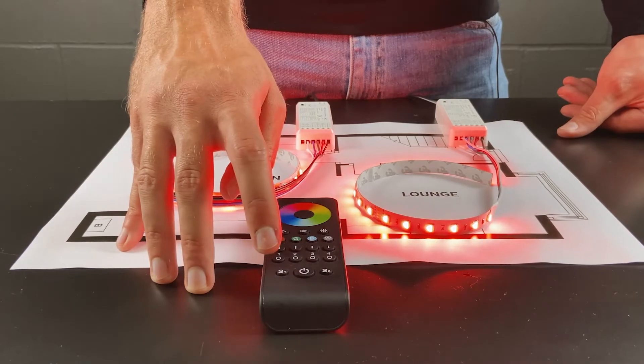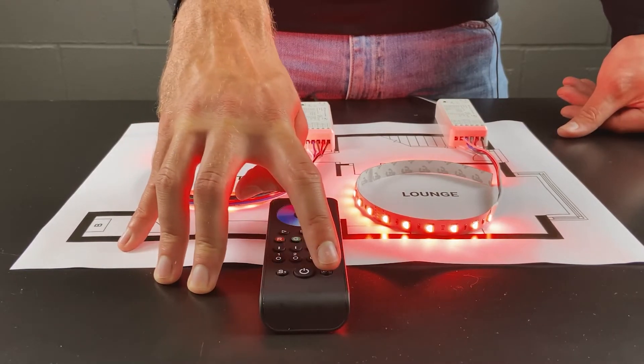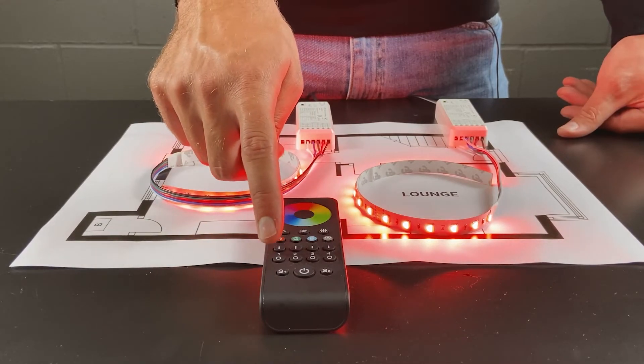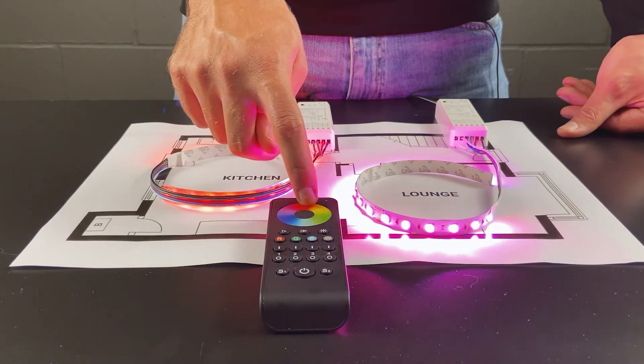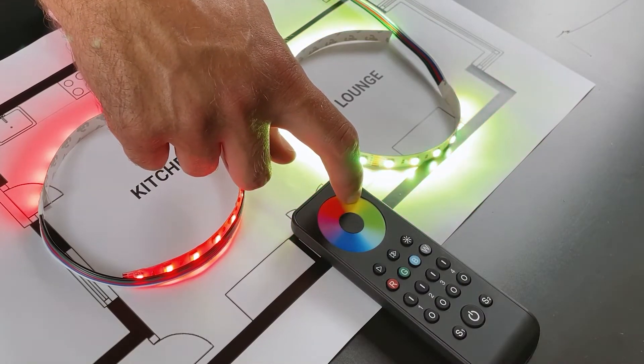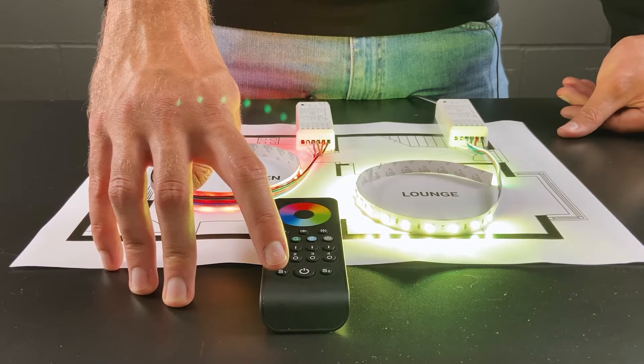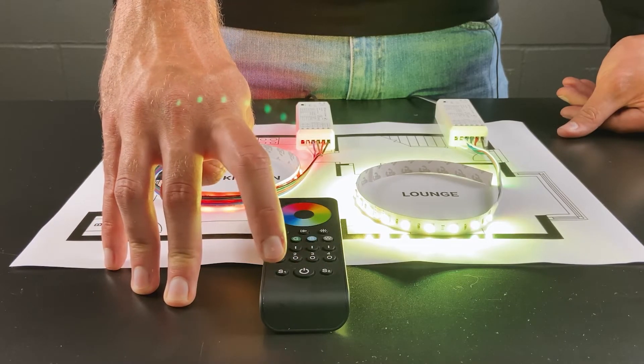You can also save scenes on this remote with the S1 and S2 button. For example, if you want a specific colour mix on one zone, you can save this by holding S1 or S2 to recall that selection.